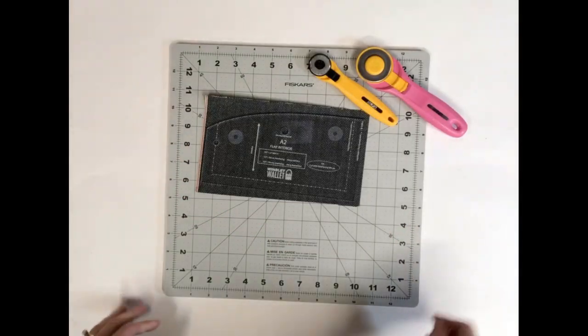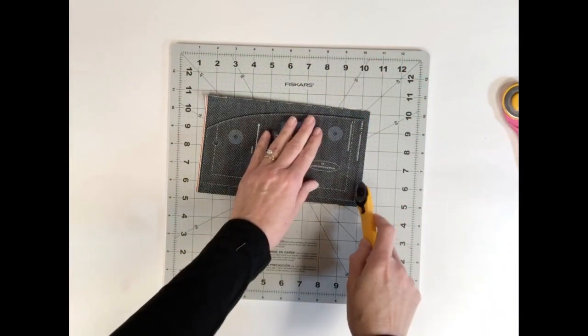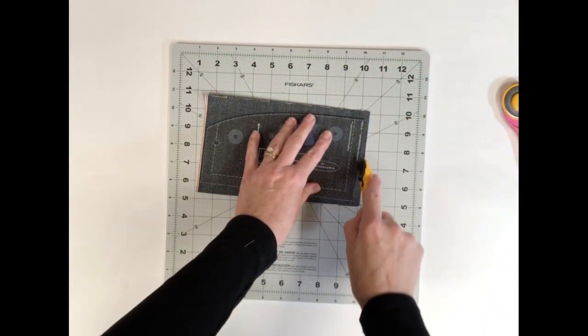As I'm cutting out this flat piece for my Winslet wallet sewing pattern, you can see what a difference it makes to replace the blade in my rotary cutter.